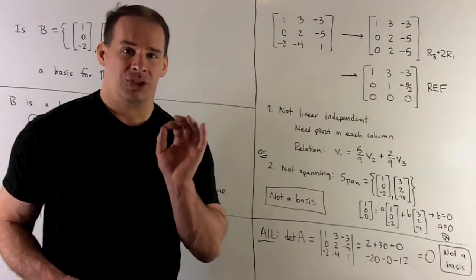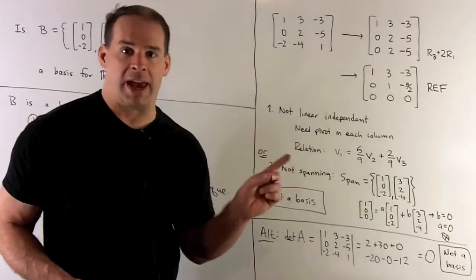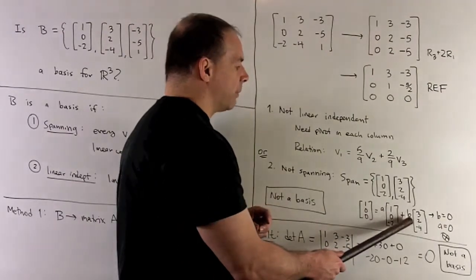To check this concretely, pick a vector you don't think is in the span. I don't think (1, 0, 0) is in the span, so I'll try to write it as a linear combination.